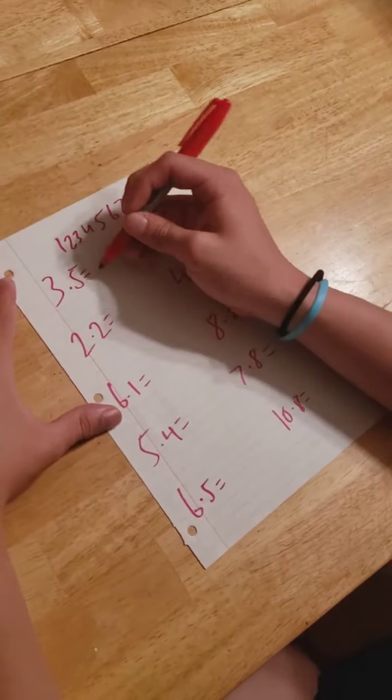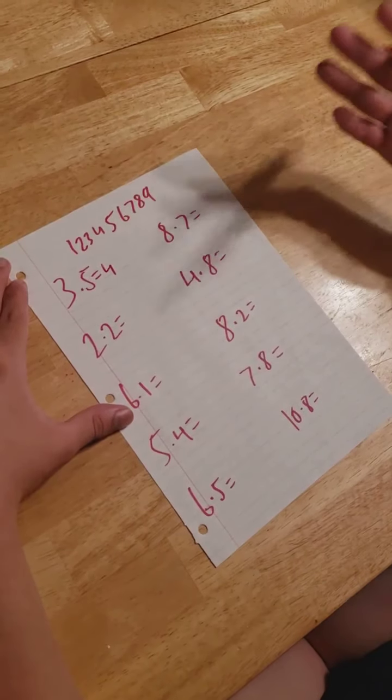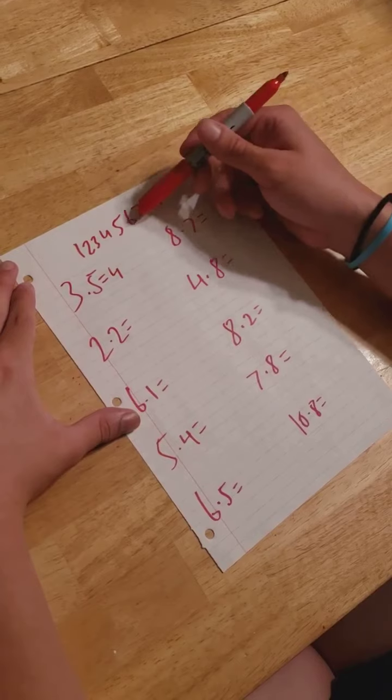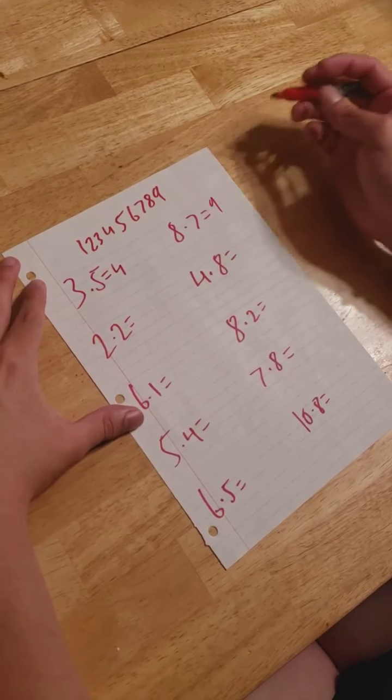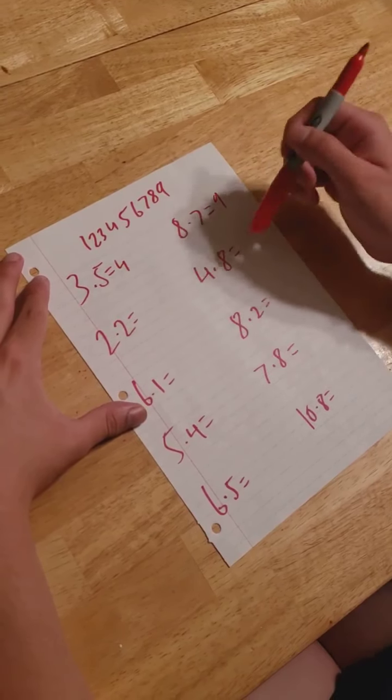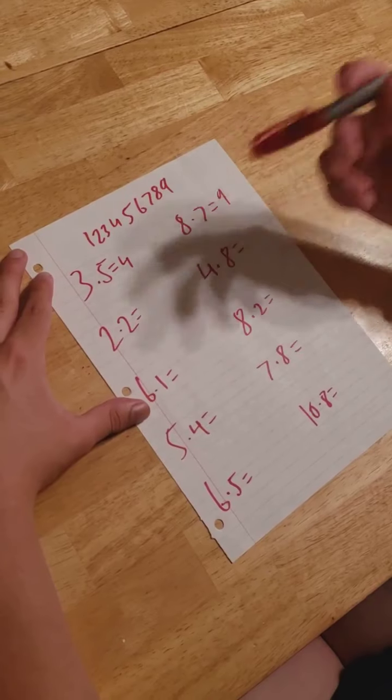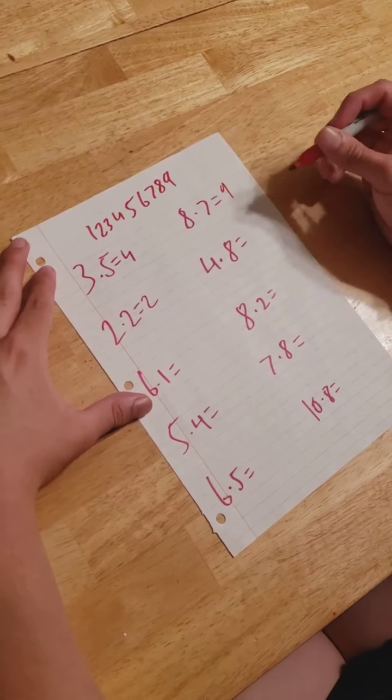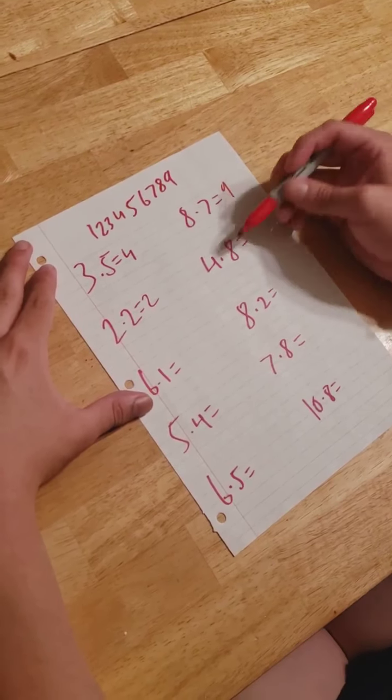So now we're just going to go over some problems on rounding. So if we had 3.5, we would round that up to 4. Same with 8.7. We see 7, 7 is above 5, so we know this can round up. You're always going to want to look at that second number. See we have 2.2, we can't round up, so let's just round it down back to 2.